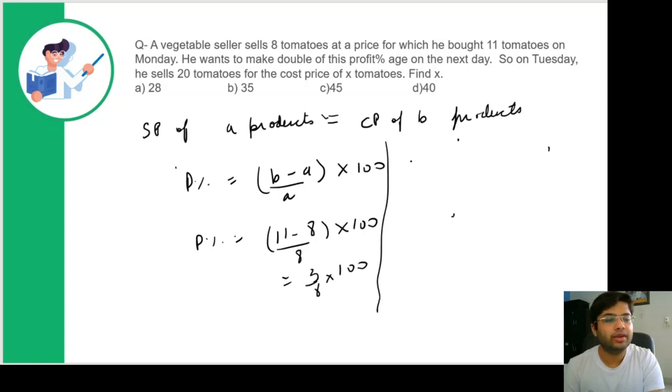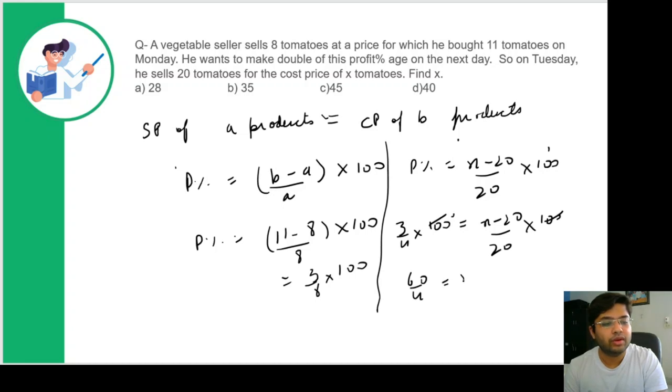Now for Tuesday, it is double the profit and CP of X tomatoes equals SP of 20 tomatoes. So profit percentage is (X minus 20) upon 20 into 100. Since it's double the profit, we write 3 by 4 into 100. So 3 by 4 equals (X minus 20) upon 20 into 100. After simplification, 60 by 4 equals X minus 20. X equals 20 plus 15, or X equals 35.